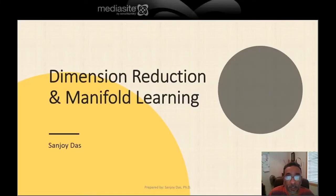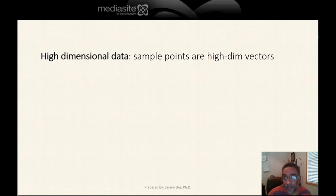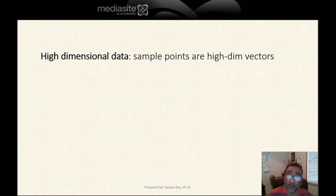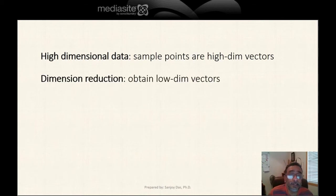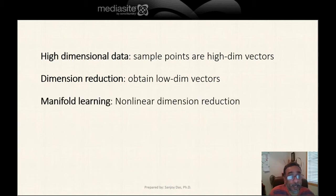The topic for today is dimension reduction and manifold learning. The raw data given to us is usually very high dimensional, so the sample points are high dimensional vectors. The goal is to reduce the number of dimensions and obtain low dimensional vector samples out of the high dimensional raw data. That's dimension reduction, and manifold learning is nothing but non-linear dimension reduction.